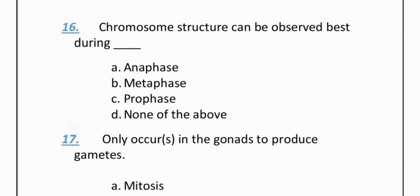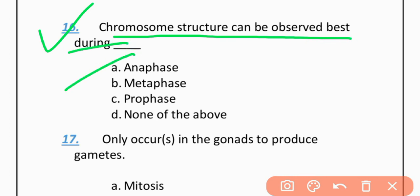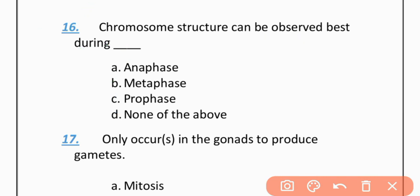MCQ 16: Chromosome structure can be observed best during — Option A: Anaphase. Option B: Metaphase. Option C: Prophase. Option D: None of these. The correct option is B — Metaphase. During metaphase, chromosomes can be best observed.